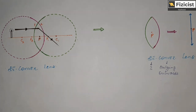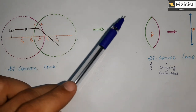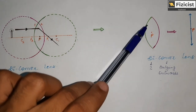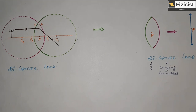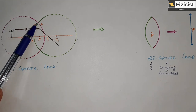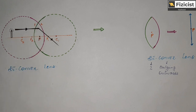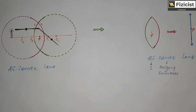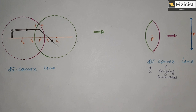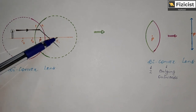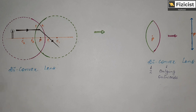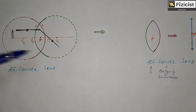One more interesting fact is that in a biconvex lens, each curved surface is a small part of a big sphere. As you can see in this diagram, this curved surface is a part of this big sphere, and this curved surface is a small part of this big sphere. These spheres have their respective centers, and the center of the sphere is called the center of curvature.